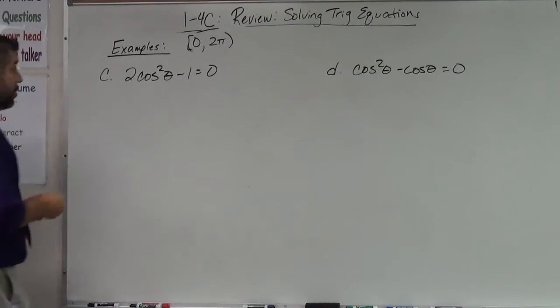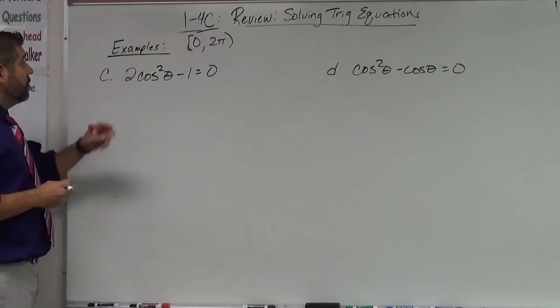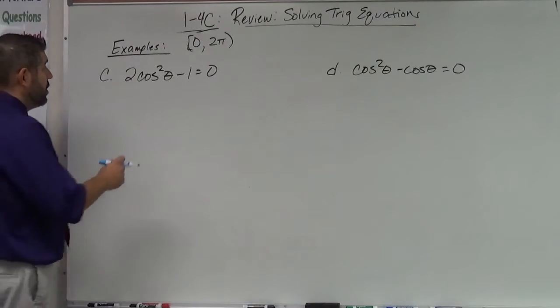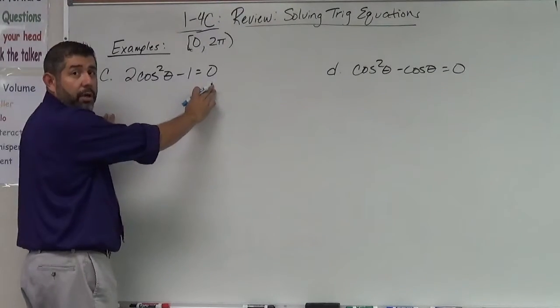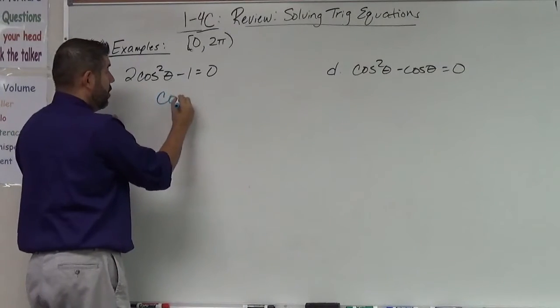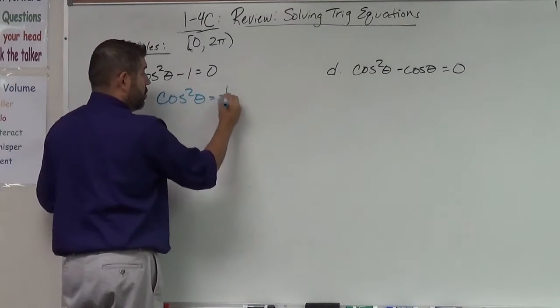Alright folks, I'm back for the last two examples on this video. Two cosine squared theta minus one equals zero. Now what I would do is I would add one over and then divide by two. It would give me cosine squared equals one half.